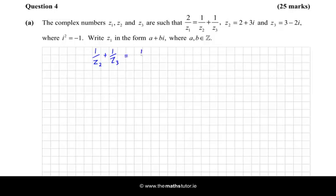Okay, so let's just write out what they are. It's 1 over 2 plus 3i, which is z₂, and then we're adding 1 over 3 minus 2i.